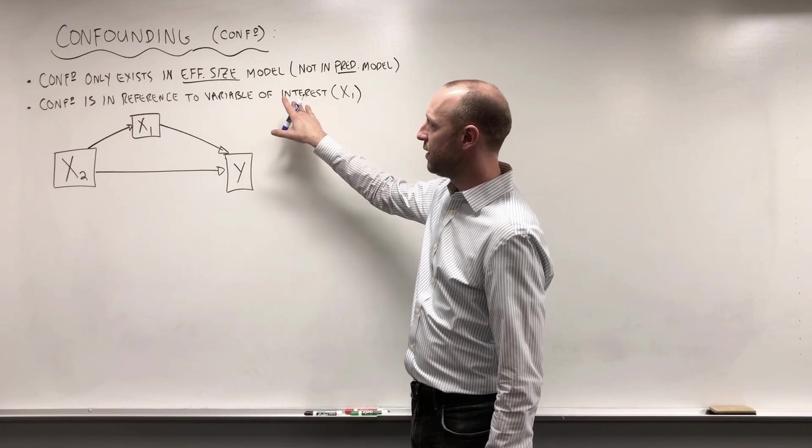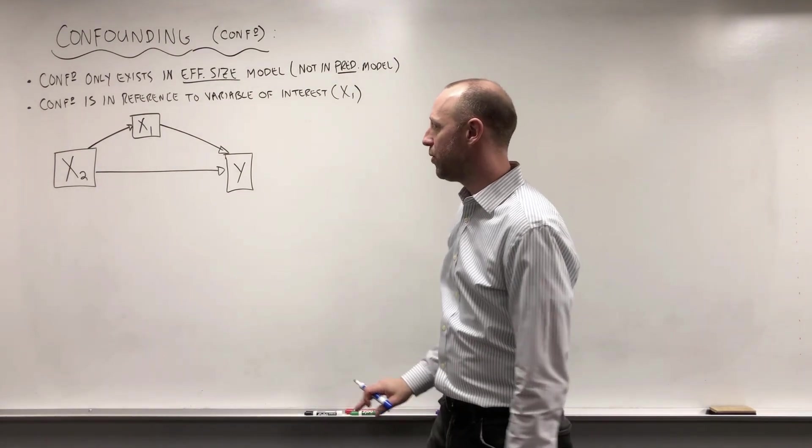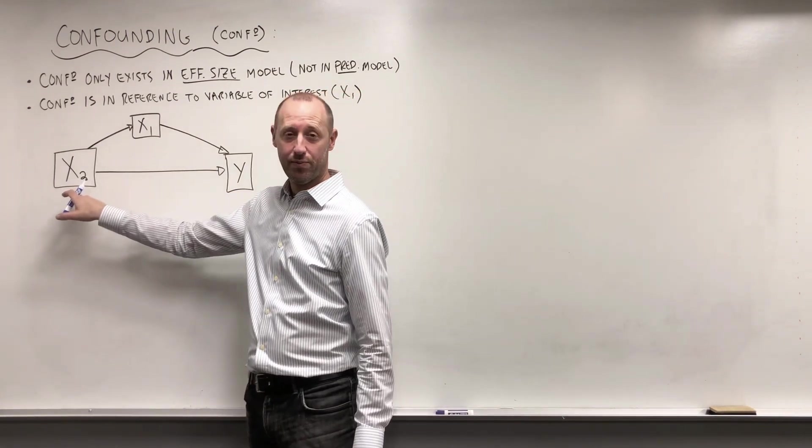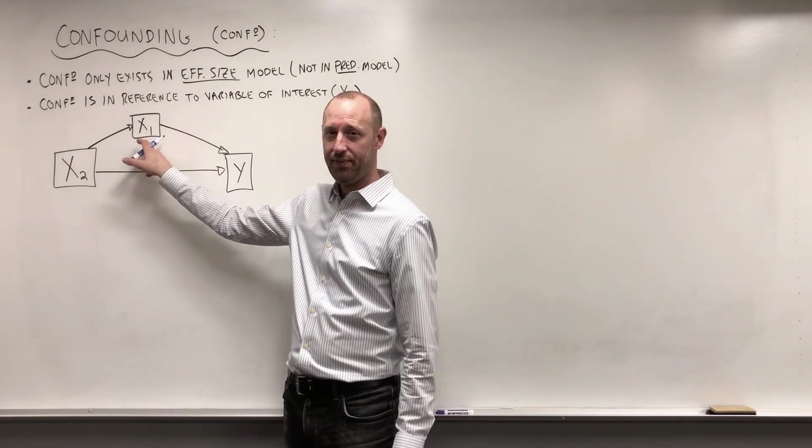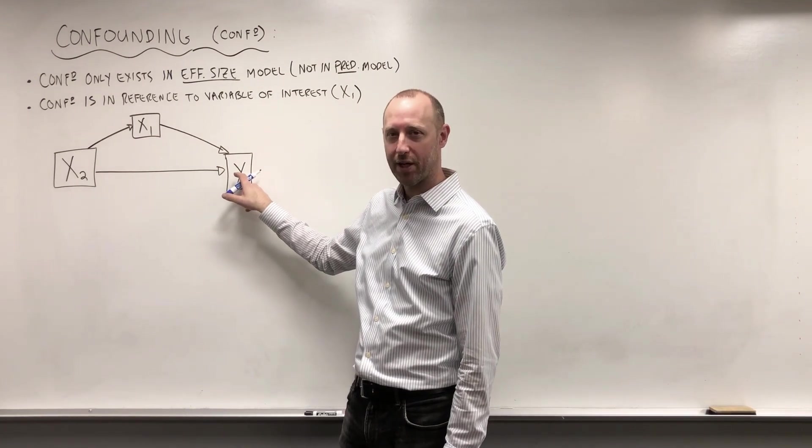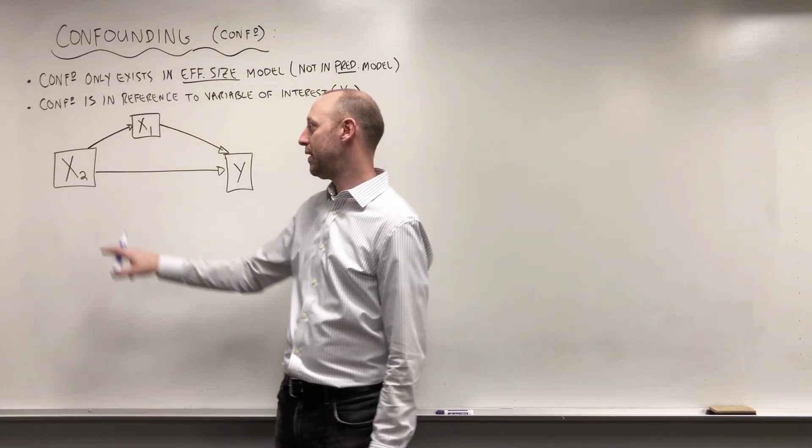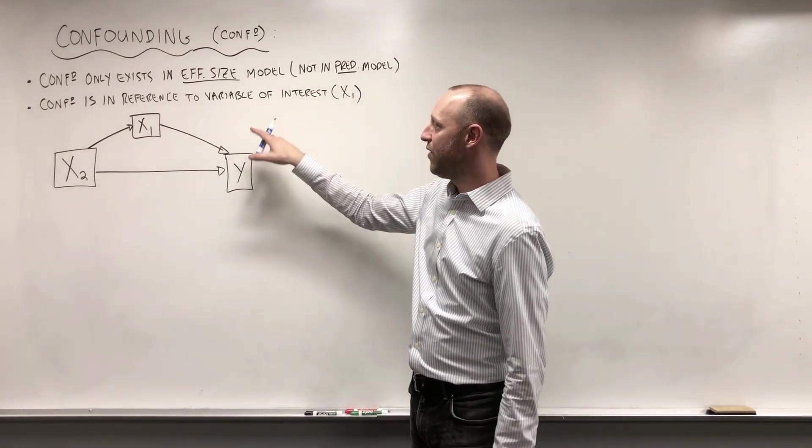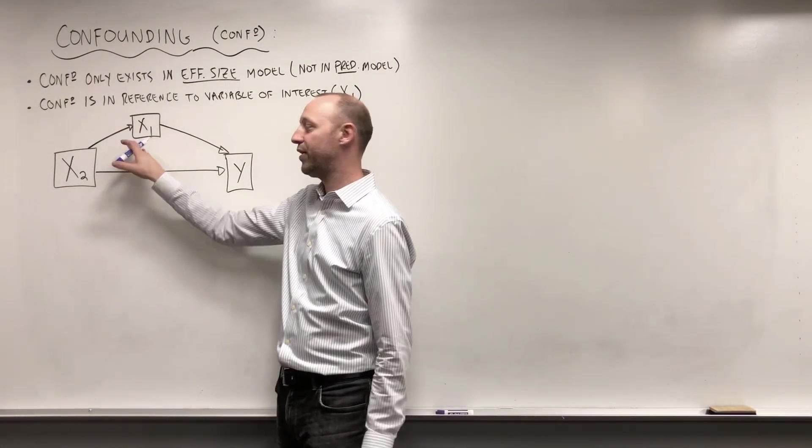A second note is that confounding is in reference to the variable of interest. For example, what we're going to start to look at is, is the effect of smoking on the lung capacity confounded with age? If we're looking at a different variable of interest, say sex, what's the effect of biological sex on FEV? Age may not be a confounder of the sex effect, but it may be a confounder of the smoking effect. That's what I mean by saying that confounding is in reference to a variable of interest. A variable is not universally a confounder.